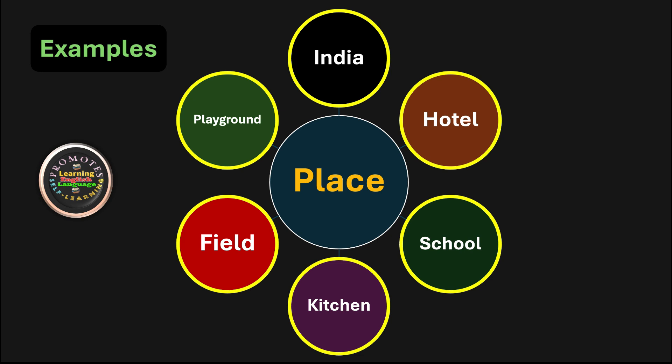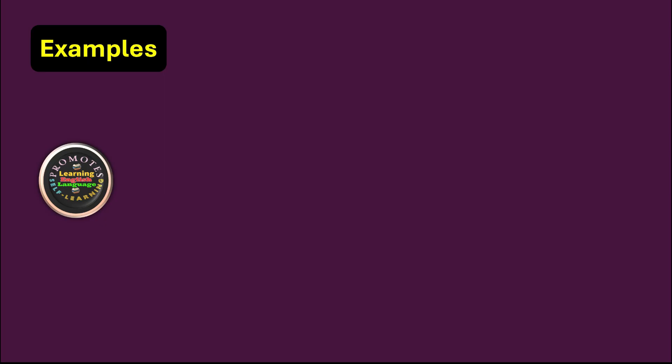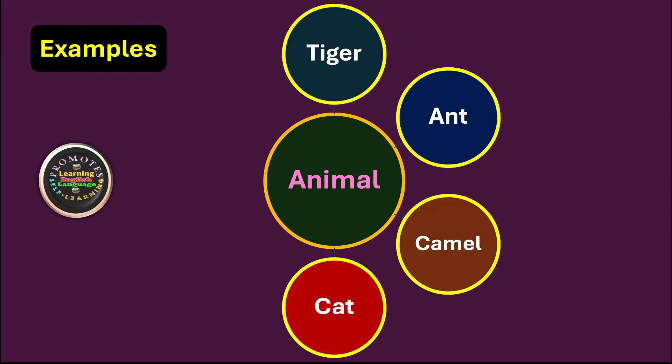We have some more examples about noun, like the name of animals. We have tiger, ant, camel, cat, dog, fox. They are all examples of animals, therefore they are nouns.